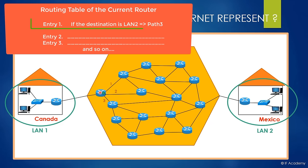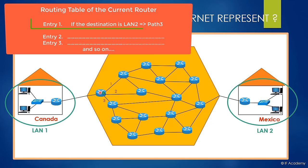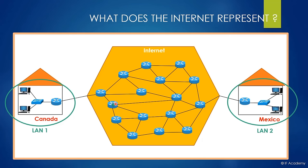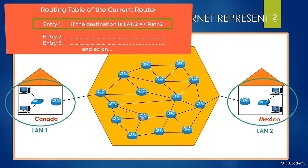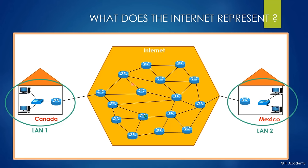Let's say according to the routing table of this router, the packet must be forwarded over path three. After that, this router looks at its routing table to decide which path the packet must go — assume it says path three again, so the packet will go to this router. The event is always the same and will continue at every router until the packet reaches LAN two.